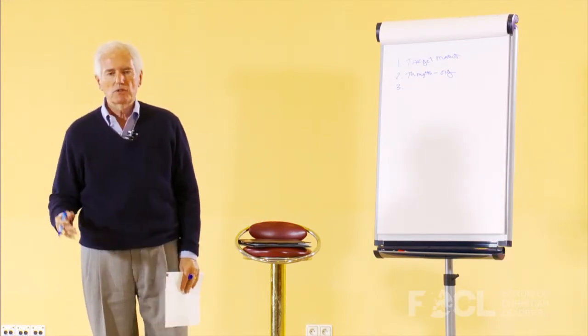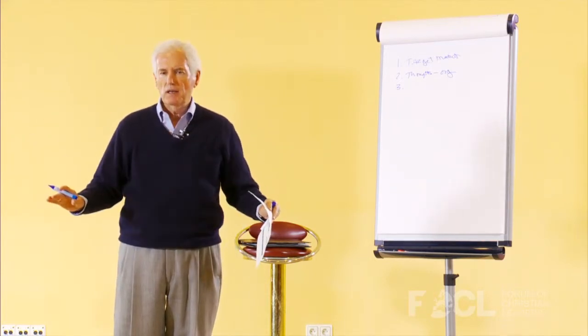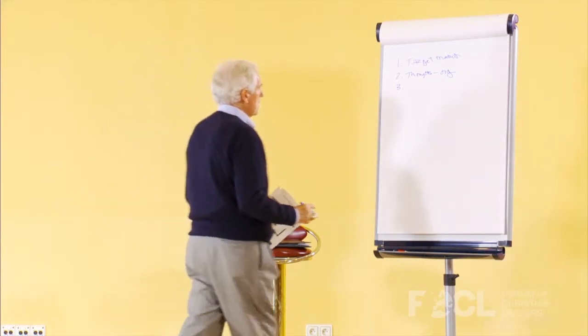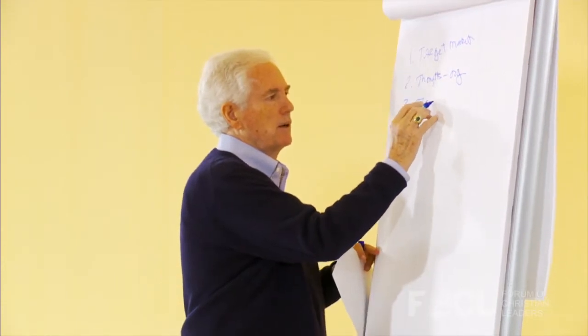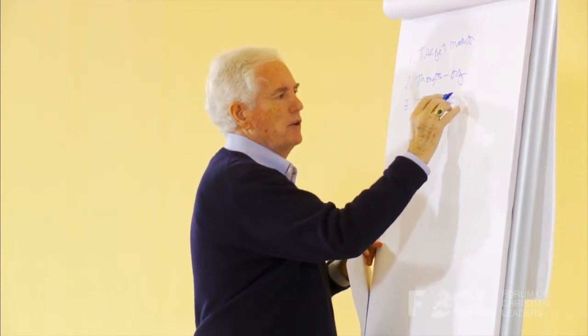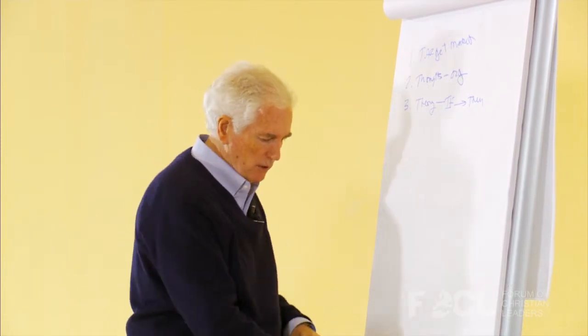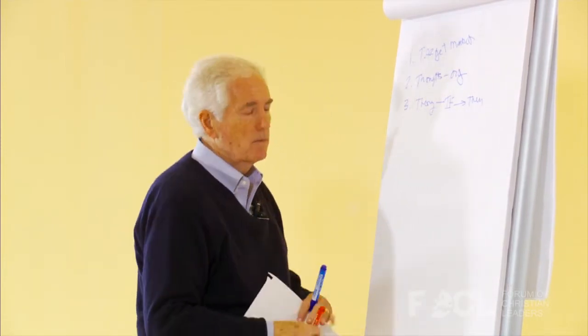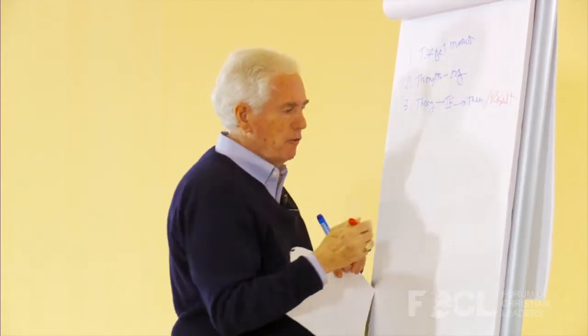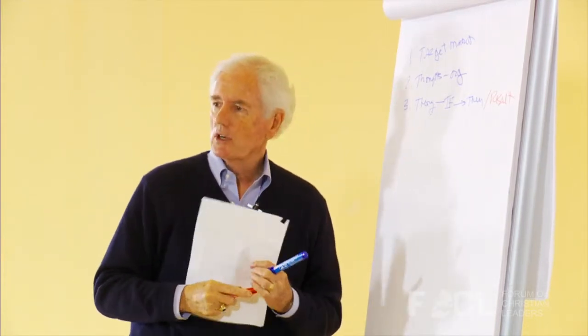The third is a theory. And the theory says, if we do this, then here will be the result. If we do this with youth, then this should be the result that happens. This is what should happen as a result of doing what we're planning to do.